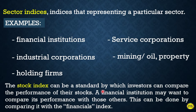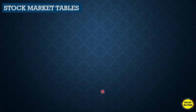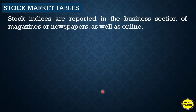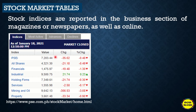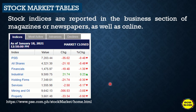Stock indices are reported in the business section of newspapers or magazines. You can also find them online. If you type the PSE link in your browser, you'll be directed to the PSE website where you can see the updated stock market tables. As of January 18, 2021, you can see the index, the value, the change, the percent change, and the ratio of change.